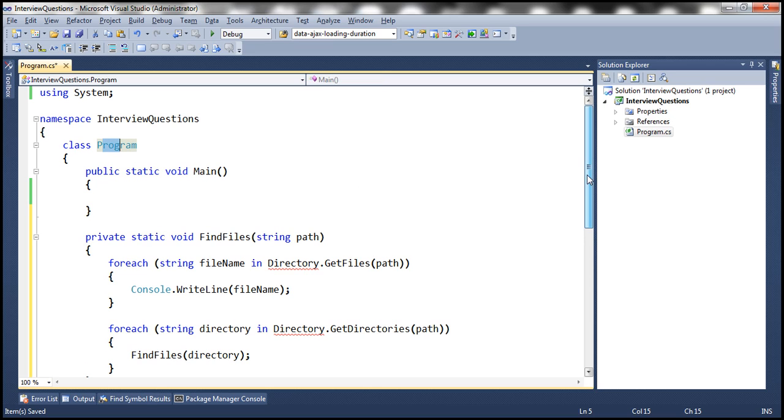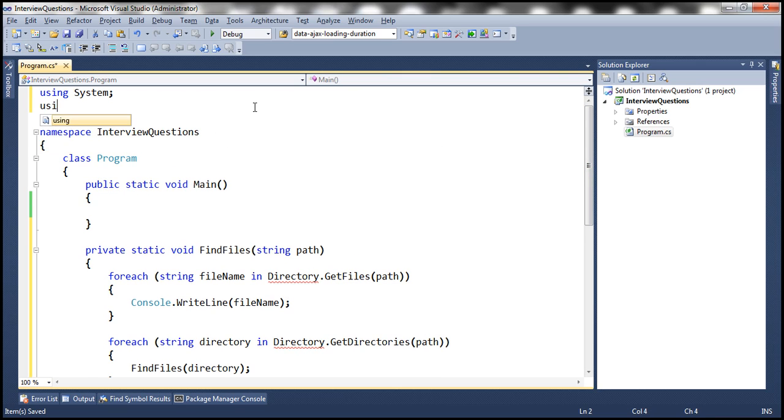Now this Directory class is present in System.IO namespace. So let's go ahead and include that.